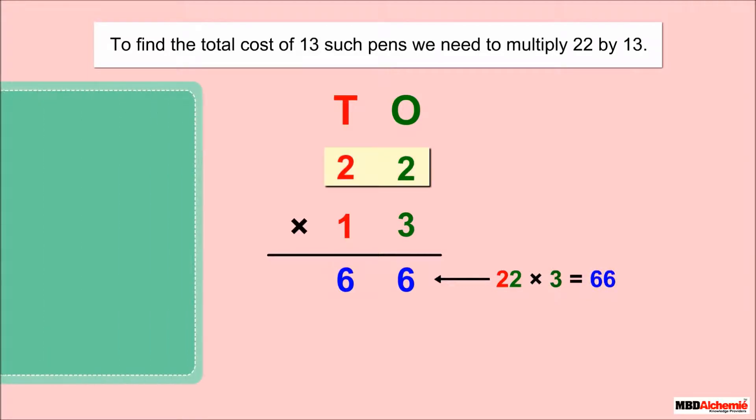Now, multiply 22 by the tens, that is one ten. 22 multiplied by one ten: 22 times 1 is equal to 22, 22 times 10 is equal to 220. Thus, 22 into 10 gives 220.